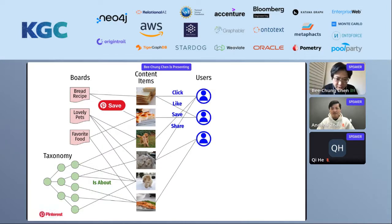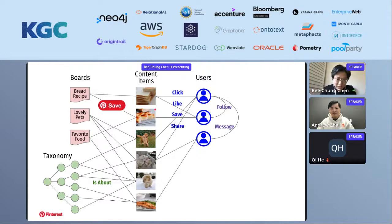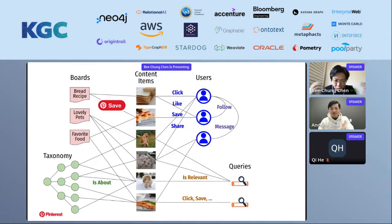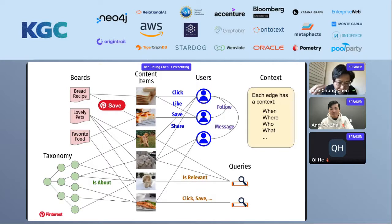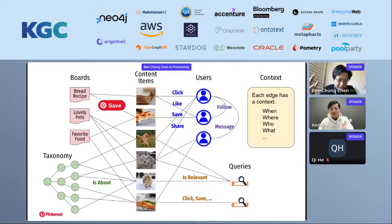Users interact with content items through click, like, save, and share, forming the user-content interaction graph. Users also interact with one another through follow, message, and other activities, forming the user-user interaction graph. Queries are also connected to images and videos through relevant labels and user activities like click and save. Each of these edges is also associated with a context — for example, when the edge was formed, where on the site, who were involved, and what the edge is about. With all these different kinds of graphs, how do we build an effective recommender system and search system?